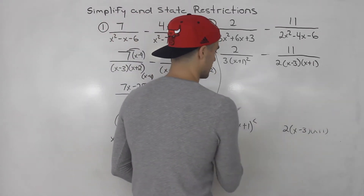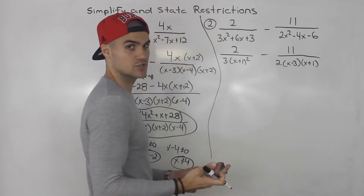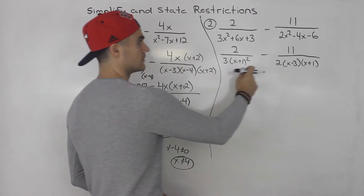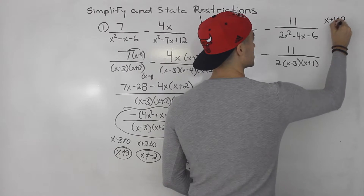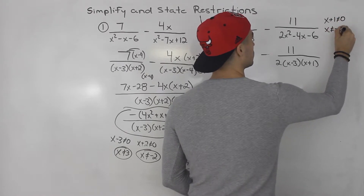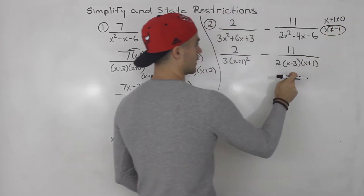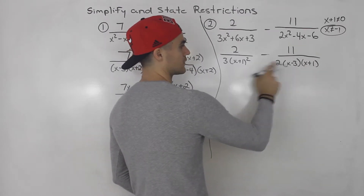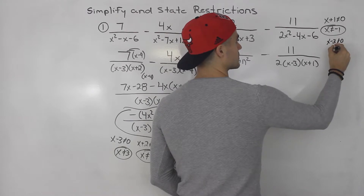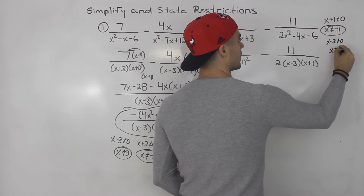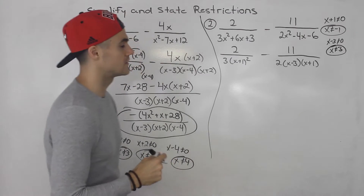Once everything is factored we can find the restrictions. X plus one cannot equal zero, which means x cannot equal negative one. X minus three cannot equal zero, which means x cannot equal positive three. So there are two restrictions in this case.